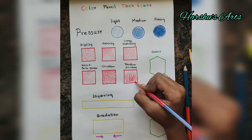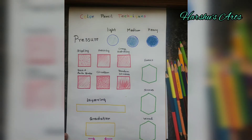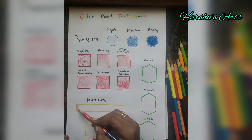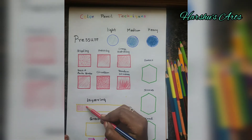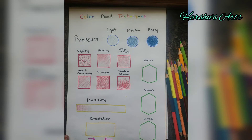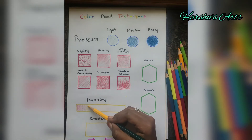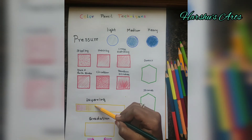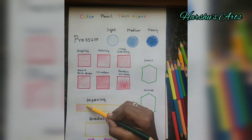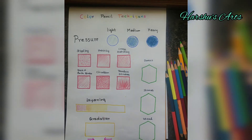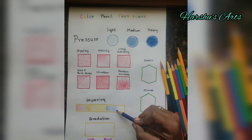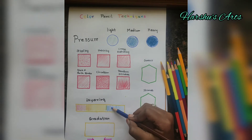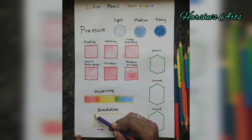The next is layering. We use color to build it up, using a third color to layer. First we use the red color, then we use the yellow color, then we use the blue color. Then we use yellow and red to make orange, and green as well.